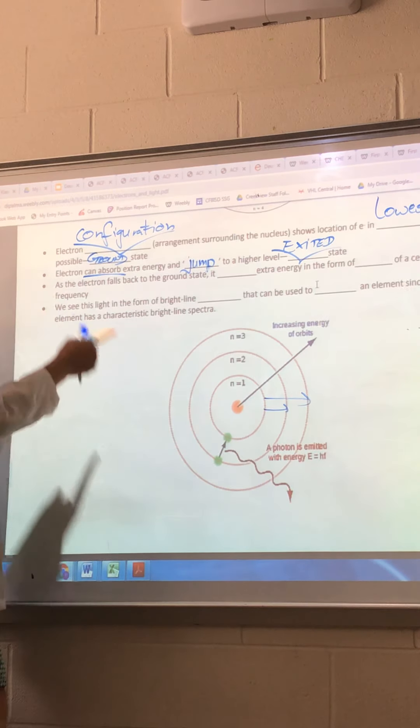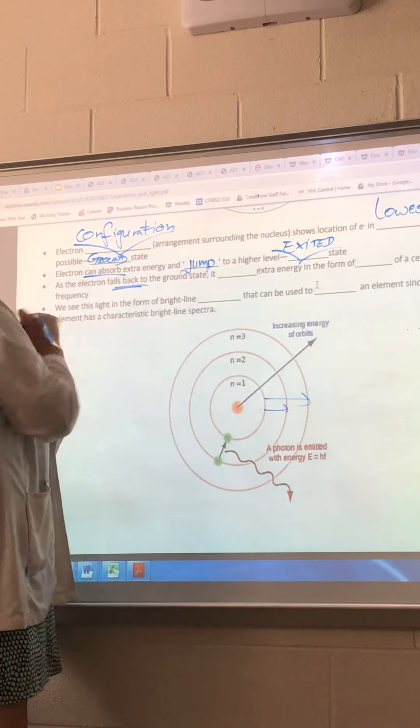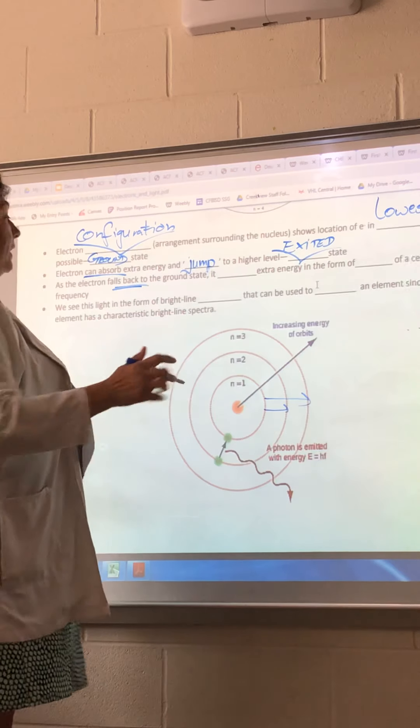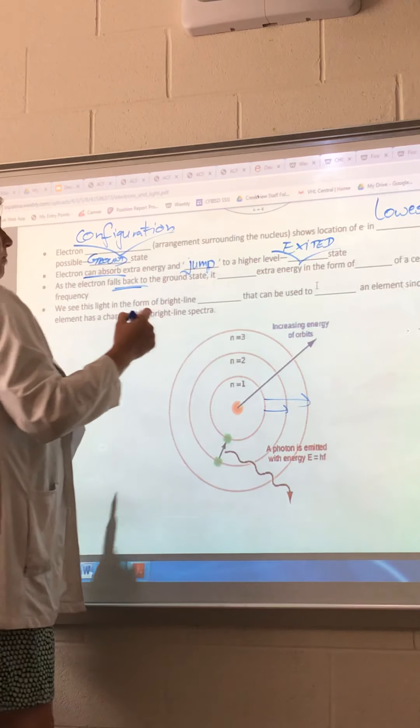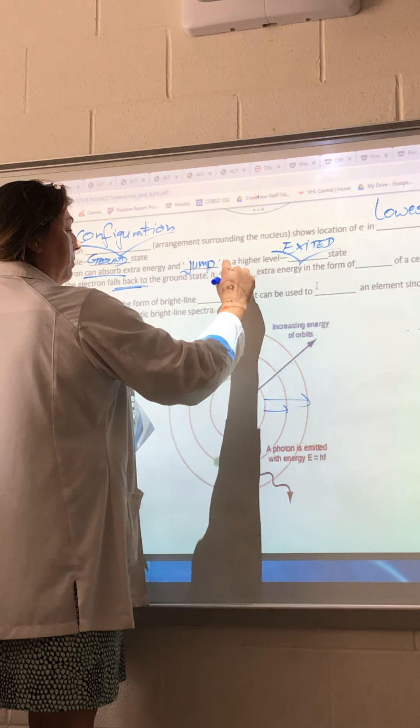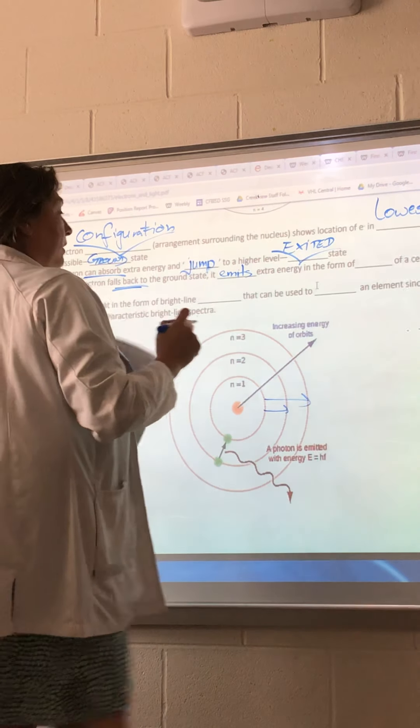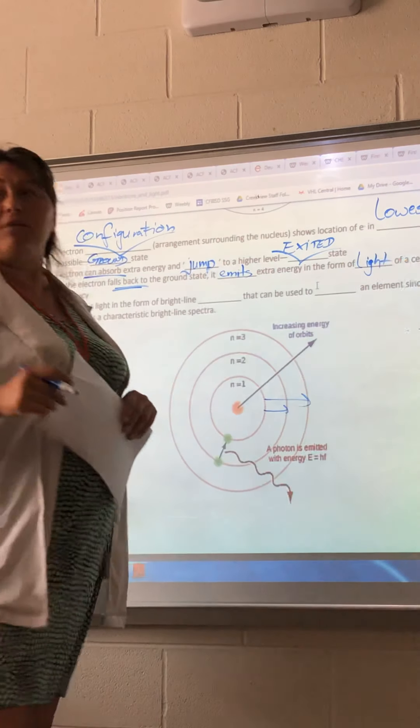And then eventually they have to fall back down. So as they fall back down, it has all this extra energy that it got from being excited. And it releases or it emits extra energy in the form of light. So it emits extra energy in the form of light. Now this light can have different colors.